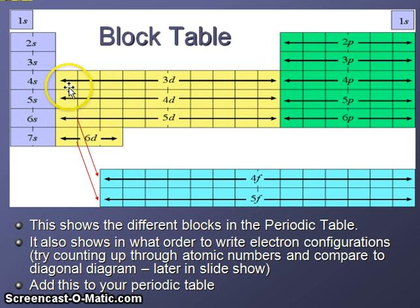Just to the left of scandium, please label 3D. Just to the left of yttrium, Y, label 4D. Just to the left of boron, label 2P. And just to the left of aluminum, label 3P. Just to the left of lanthanum, which is right here, please label 4F. And just to the left of actinium, label 5F.